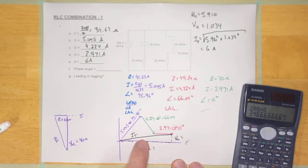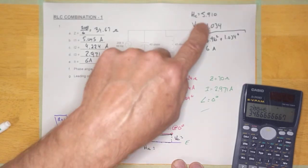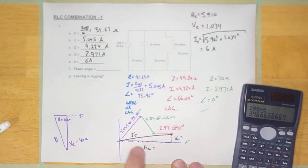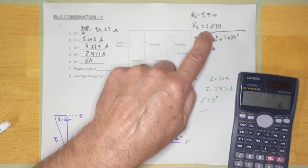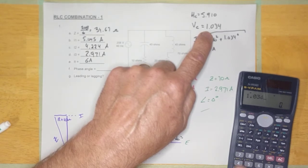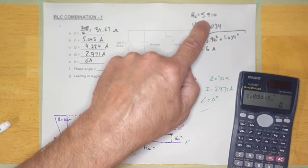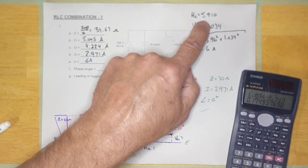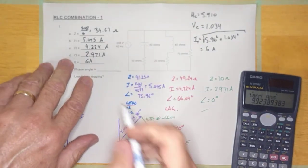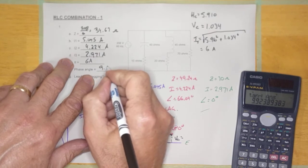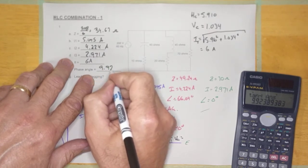Phase angle — I can see it right there. It's opposite over adjacent, inverse tangent. The opposite is the vertical component and the adjacent is the horizontal component. So: inverse tan of 1.034 divided by 5.910 equals 9.92 degrees.